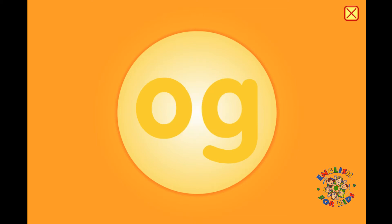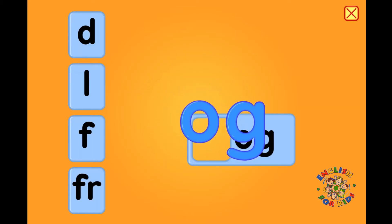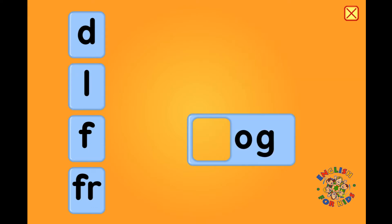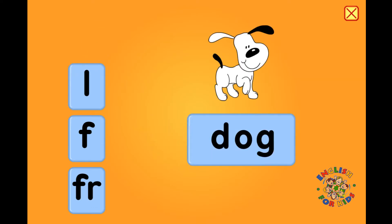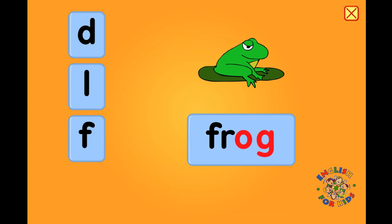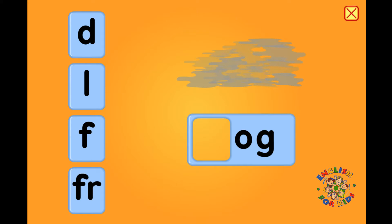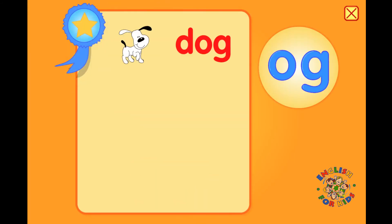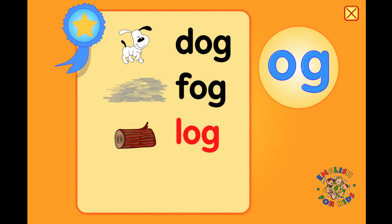Make a word with O-G to match the picture. Dog, d-o-g. Alright! You know dog, fog, log, frog.